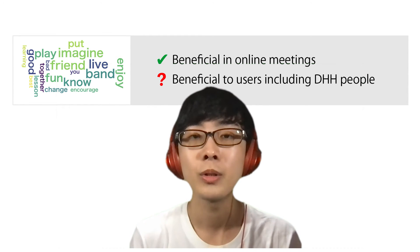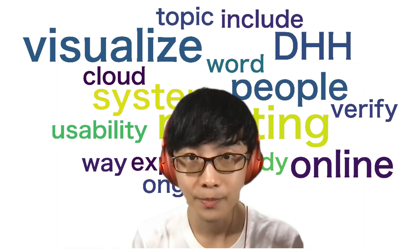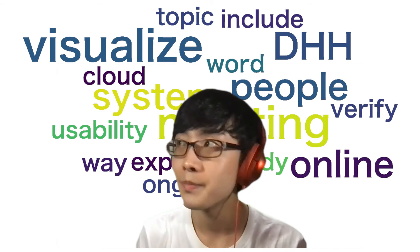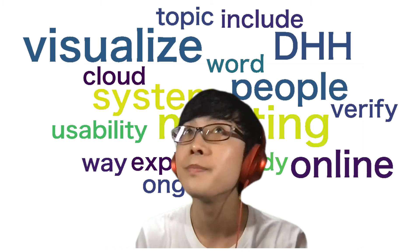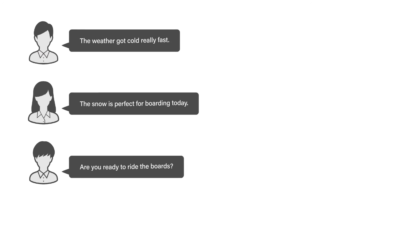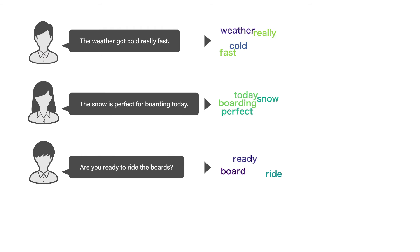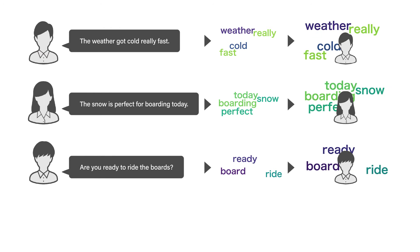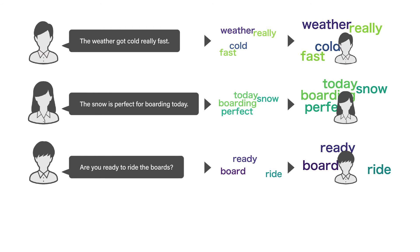So, we introduce Word Cloud for Meeting. This system generates a separate Word Cloud for each participant and displays it in the background of each participant's video to visualize who is saying what.